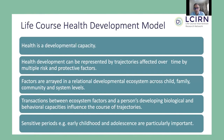The Life Course Health Development Model views health as a developmental capacity of individuals. Health development can be represented by trajectories affected over time by multiple risk and protective factors arrayed in a relational developmental ecosystem across child, family, community, and systems levels. Dynamic transactions between these environmental factors and a person's developing biological and behavioral capacities influence the course of these trajectories, especially during sensitive periods such as early childhood and adolescence.